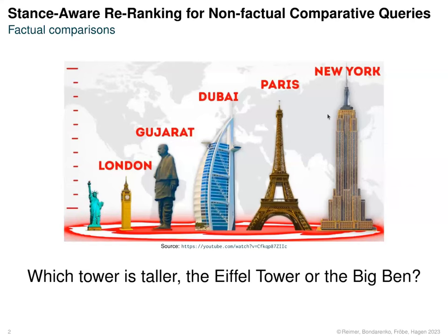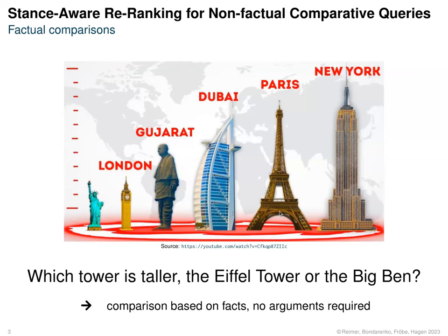First of all, if you think about comparing stuff, you probably think of something like this, where you have some options and you want to know, for example, which tower is taller — the Eiffel Tower or Big Ben. But from an argumentative perspective, these comparisons are not really interesting because such factual comparisons can be answered purely based on facts and don't require any argumentation.